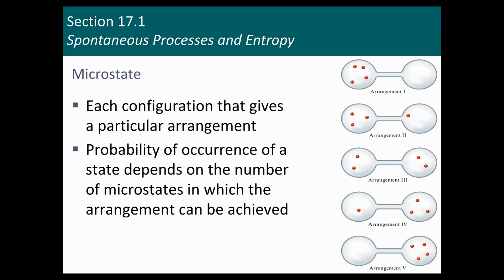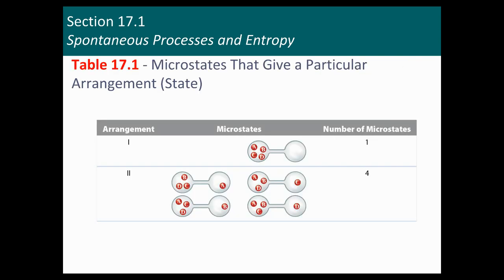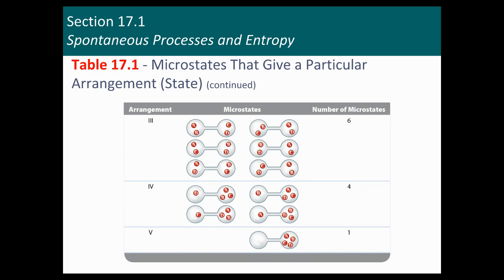Each configuration gives a particular arrangement. The probability of occurrence depends on the number of microstates by which the arrangement can be achieved. In the first example, arrangement one, there's only one microstate — one possibility — but in two, there are four different possibilities. You can imagine if you have Avogadro's number of molecules how many possibilities there will be. In the third arrangement, there are six microstates. The tendency of molecules is going to want to be towards the one with the greater number of possible microstates.